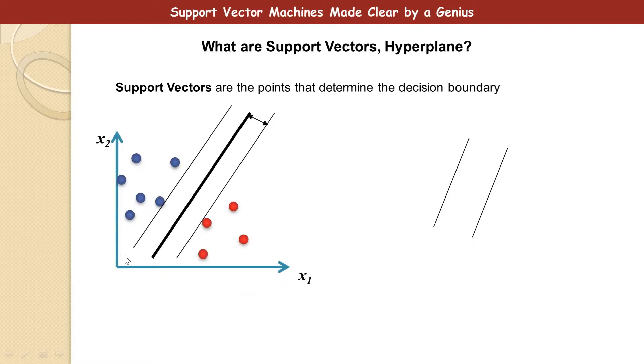Now, some users think that Support Vectors are the lines, these lines that are parallel to the decision boundary.